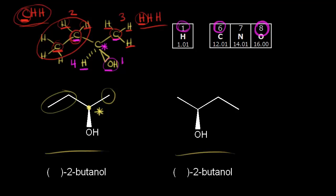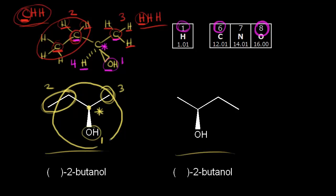Now we've assigned priority to all groups. The OH gets number one, the ethyl group gets number two, the methyl group gets number three, and the hydrogen is our lowest priority group pointing away from us — so step two is done. Going around one, two, three in a circle, we go clockwise. Clockwise means this is the R enantiomer: R-2-butanol.